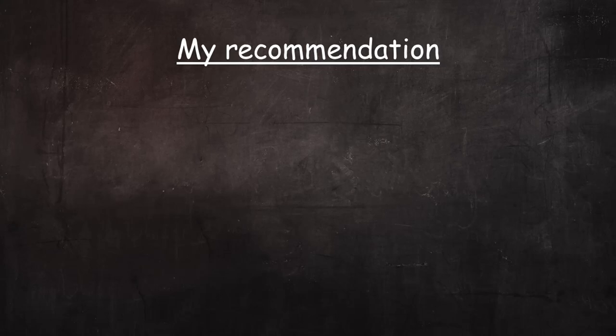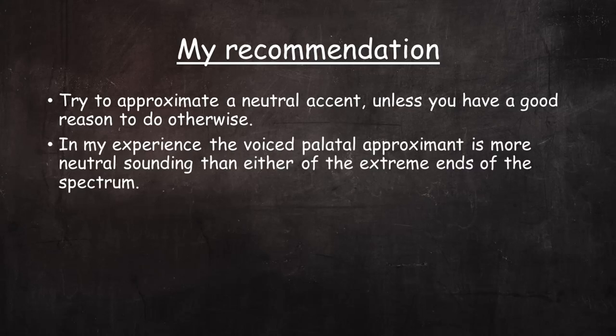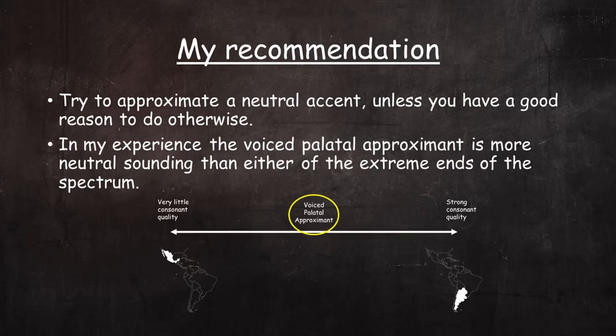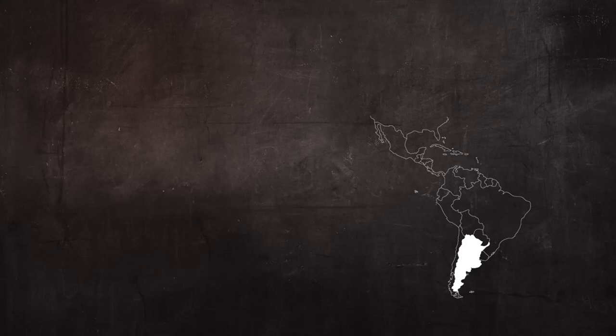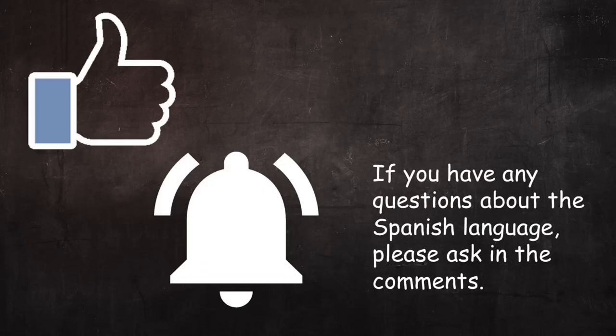My recommendation for most students is that they try to approximate a neutral accent, unless they have a good reason to do otherwise, and the voiced palatal approximant is more neutral sounding than either end of the spectrum. Of course, if you know you're going to be studying in Argentina, that's a great reason to try to sound like an Argentine. Or if your girlfriend's family is from Mexico, that's a great reason to take up Mexican pronunciation. Or if your job takes you to Spain, you should probably try to sound like a Spaniard. Hopefully this video will give you some of the tools you need to investigate the dialect you're most interested in and adapt your Spanish accordingly. If you've enjoyed this video, please like and subscribe. If you have any questions about the Spanish language, please ask in the comments — I'd be happy to consider making a video to answer your question.